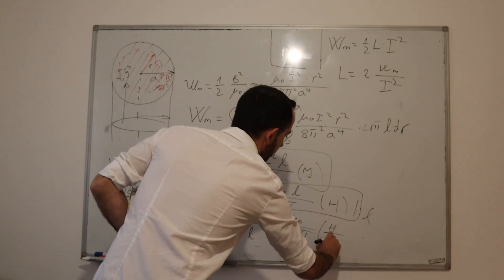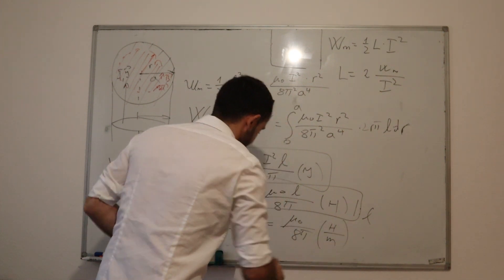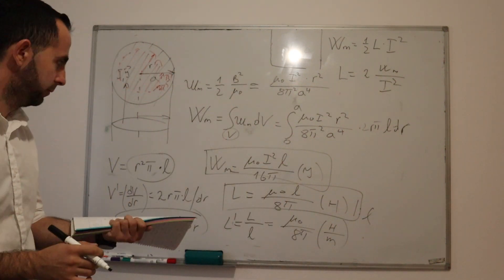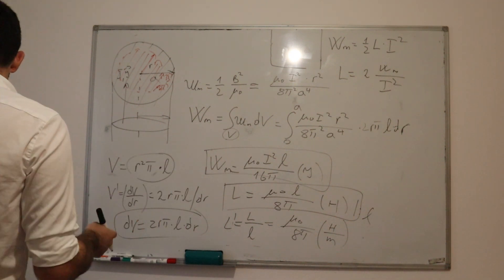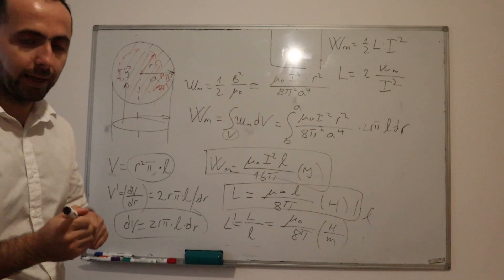I am using this notation. You can use any notation you want. It's actually inductance divided with length of our conductor, and it will be μ₀ divided by 8π. The unit is, of course, Henry per meter. That would be it. Thank you for watching. See you in the next video.